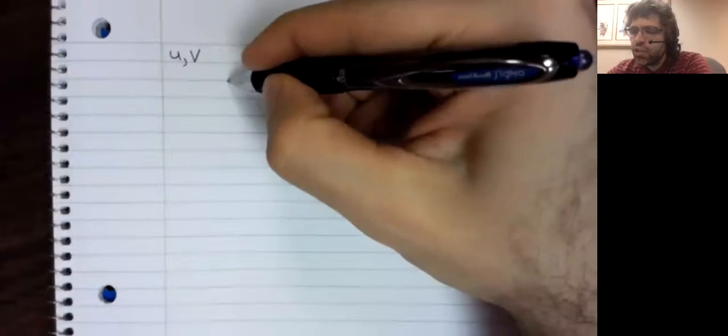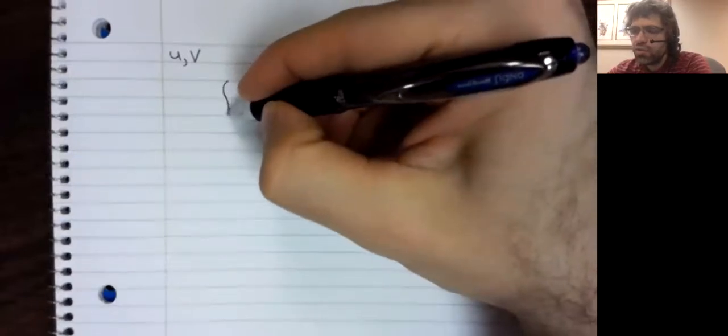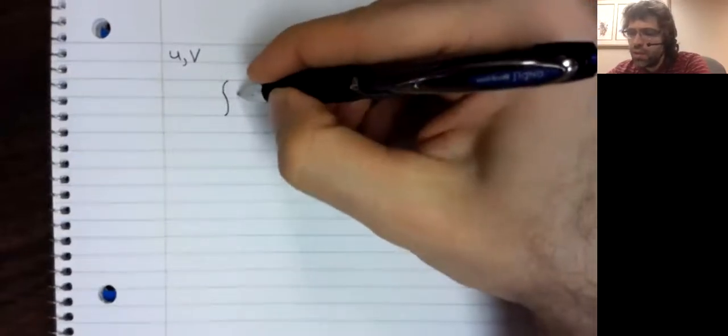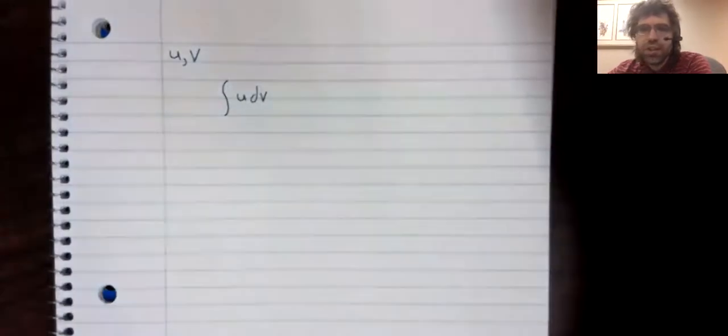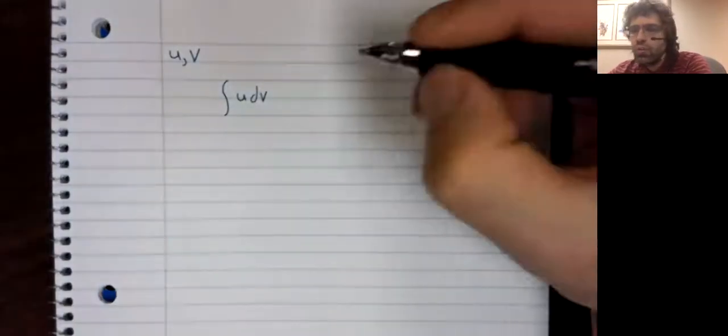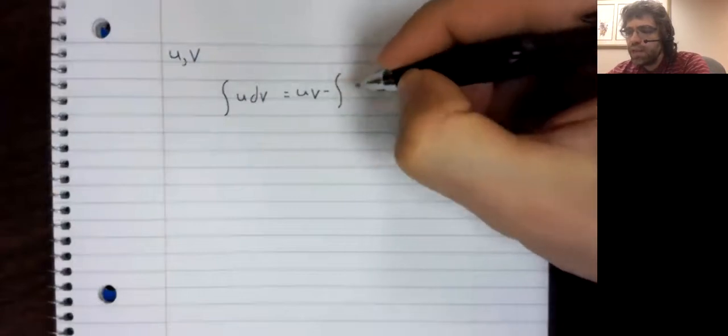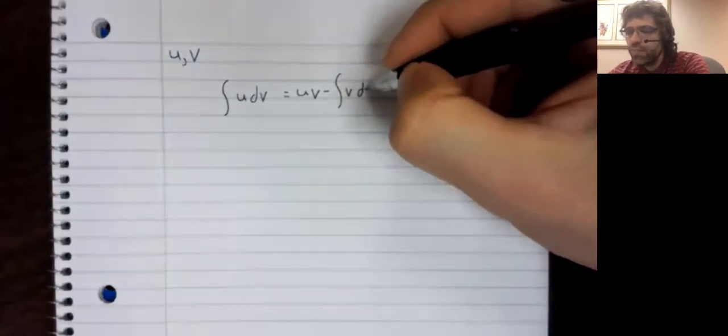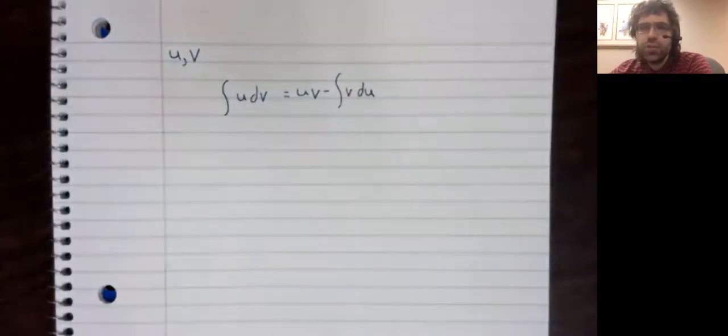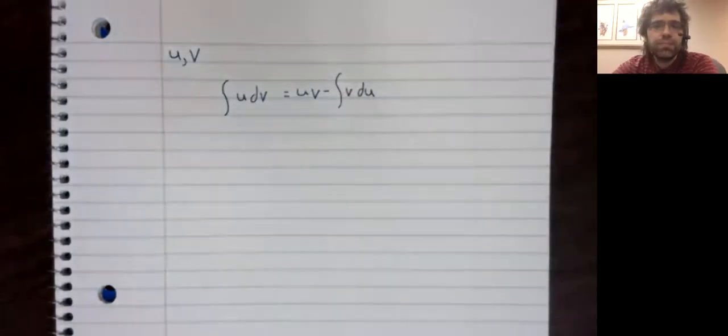And the integration by parts formula is as follows. The integral of U dV equals UV minus the integral of V dU. Now, what on earth does this mean?